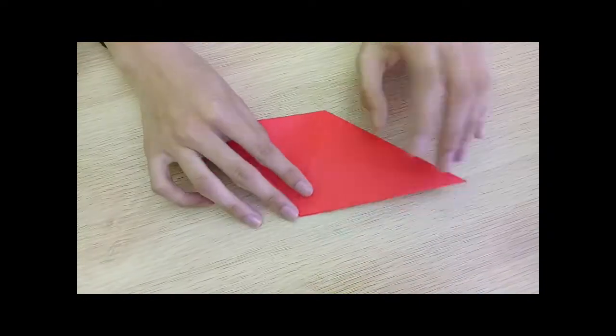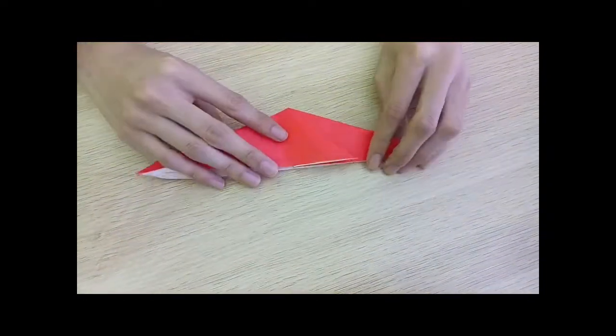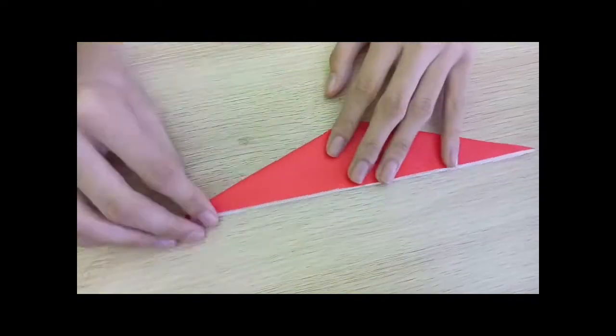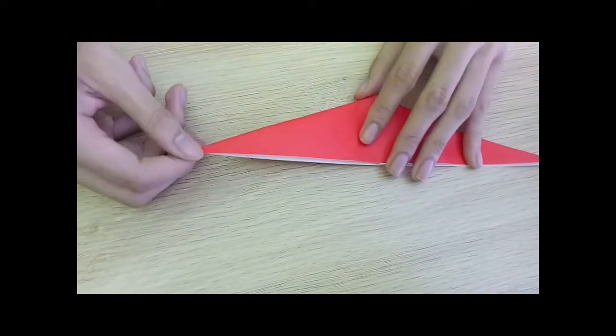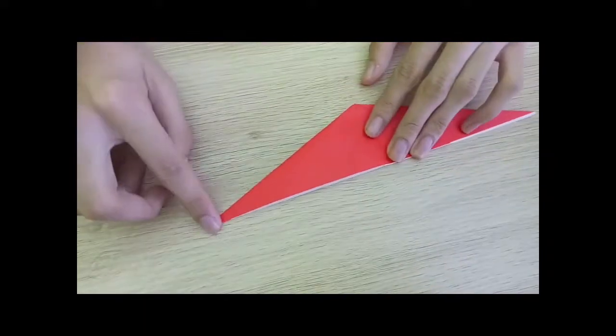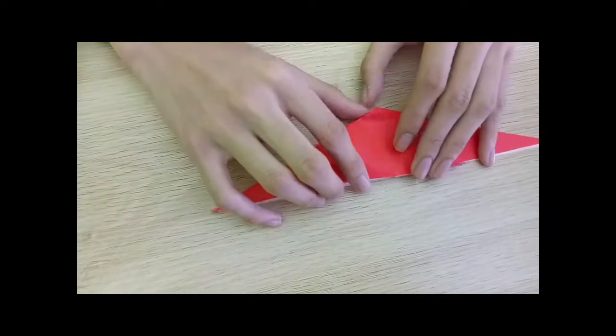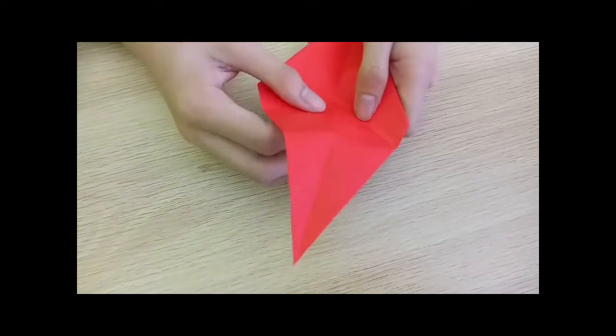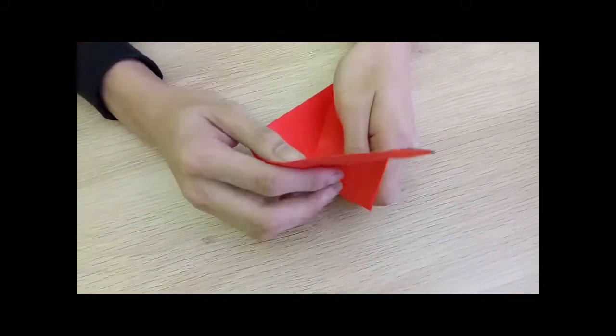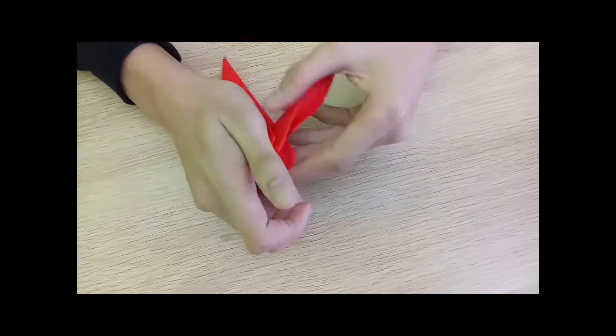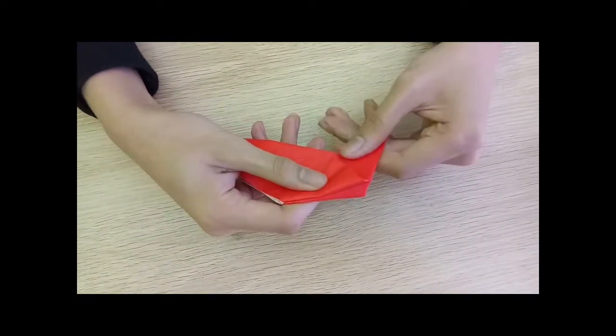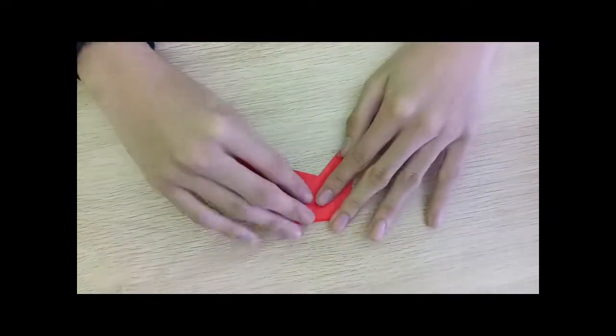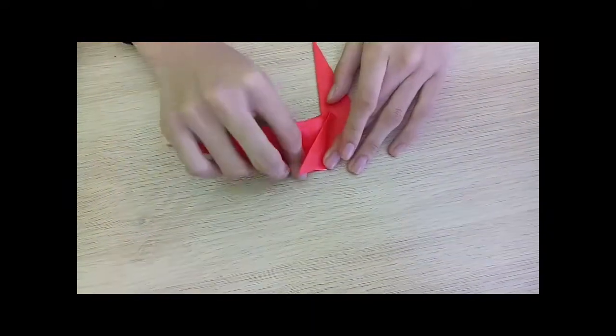So what you want to do now is flip the paper and fold it backwards. Now bring this corner to the very top and then fold it on the halfway line, so like this. Now do the same with this side.